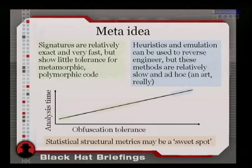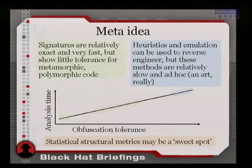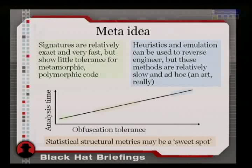What I'd like to find is a sweet spot, like Goldilocks — not too cold, not too hot, but just right. Just the right amount of simplification so we have a little bit more obfuscation tolerance, and yet we retain some of the speed we had before.